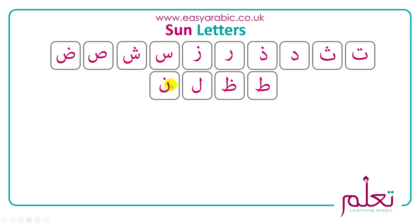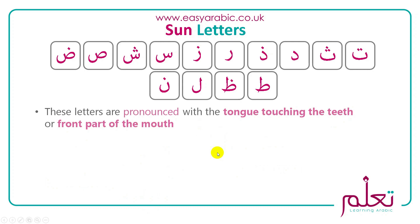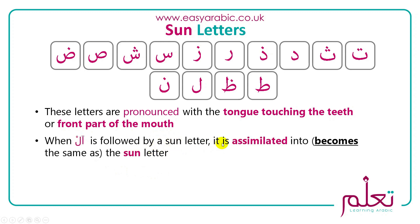If you try this — ta, tha, dal, dhal, ra, sin, shin, sad, dad — you'll feel the tongue touching the top each time. So whenever you're reading and you're not sure if a letter is a sun letter, keep an eye on where your tongue touches. If it touches the top, it is a sun letter. When 'al' is followed by a sun letter, the lam is assimilated — it becomes the same as the sun letter.